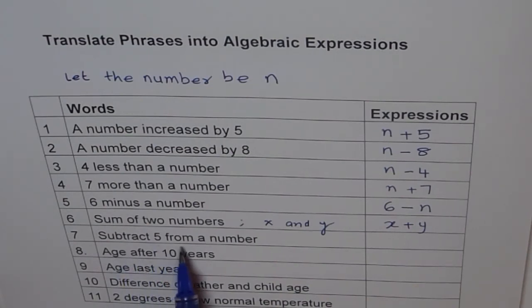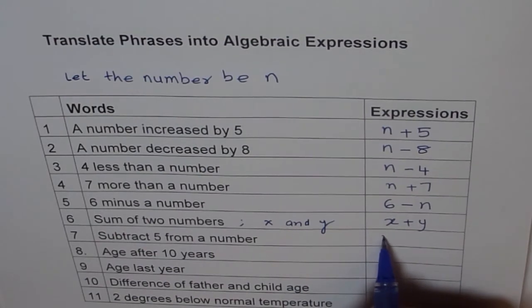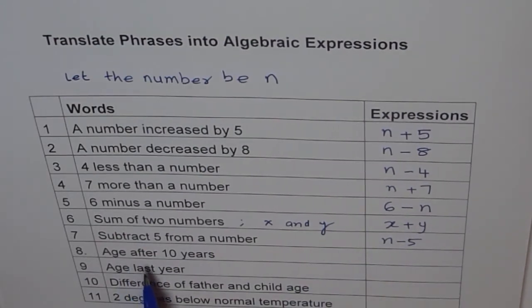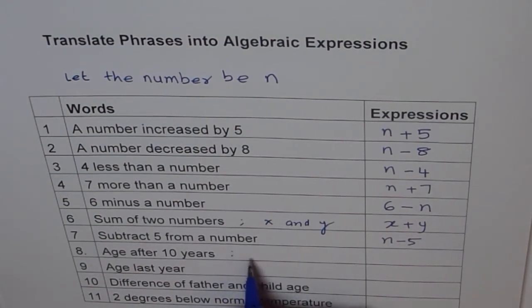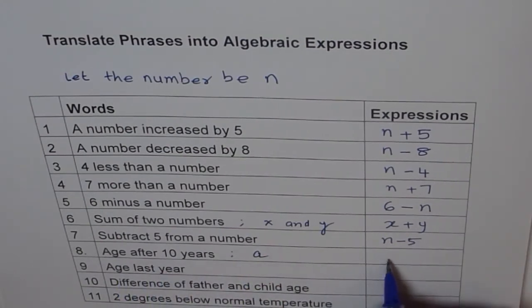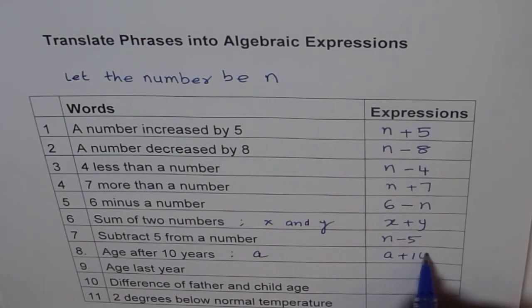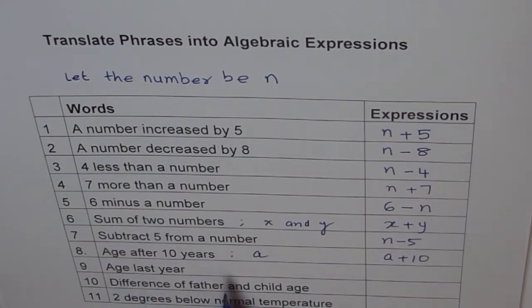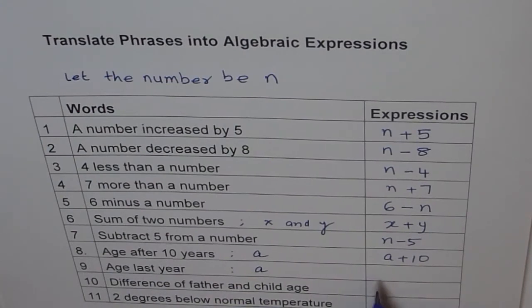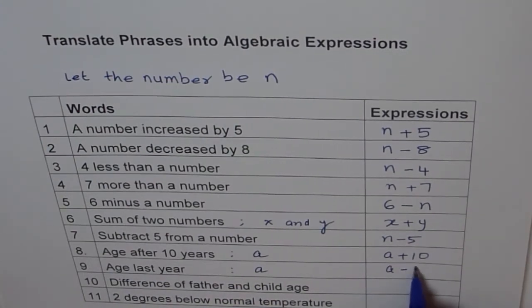Subtract 5 from a number. So we have to subtract 5 from a number. So number and then take away 5. Age after 10 years. We will say let the age be a. So we define a variable here. And then age after 10 years will be a plus 10. Age last year. Let the age be a. And last year it was 1 less, so a minus 1.